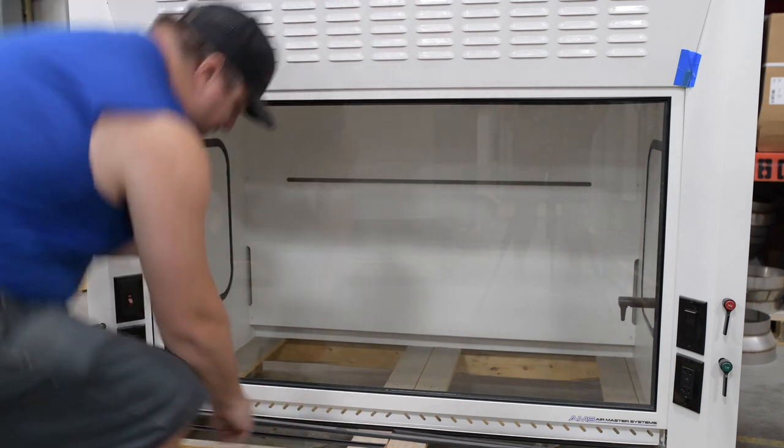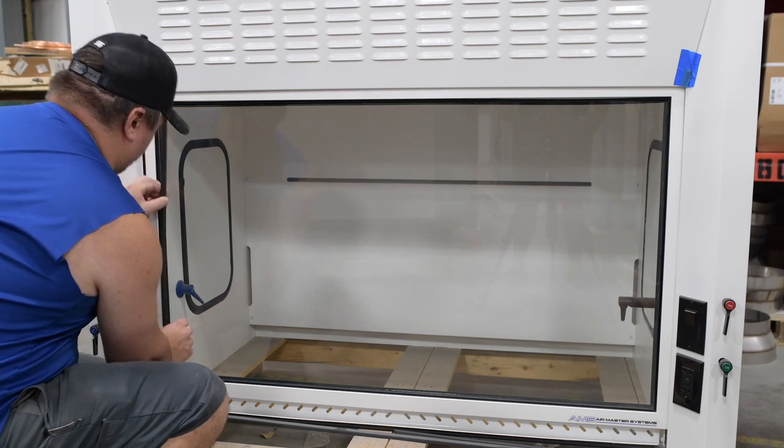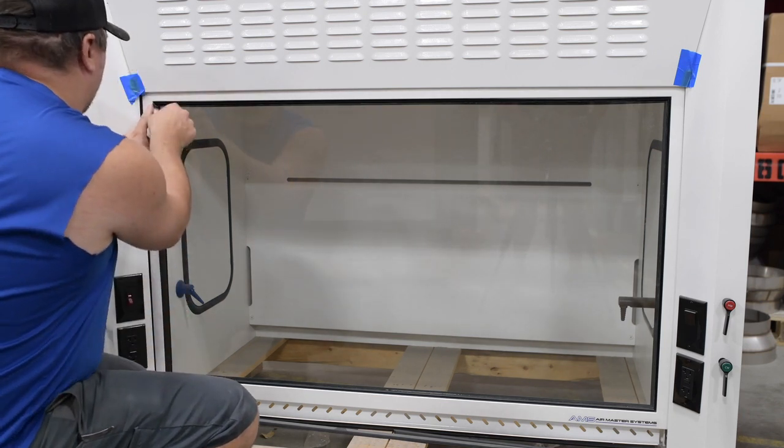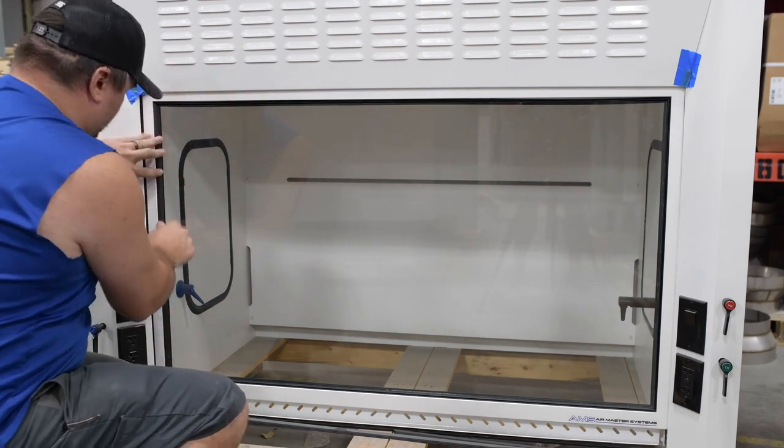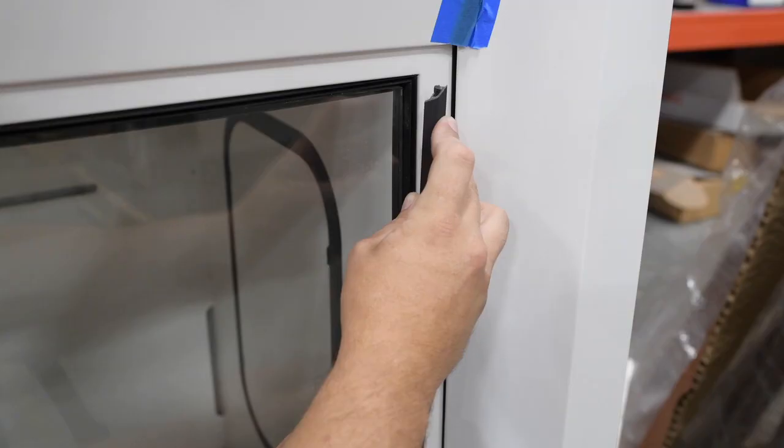You can reuse your previous sash trim to put the new glass into position. Start by sliding the sash trim into the correct spots and put pressure on them. You will notice that the ribs will click into place between the sash and the metal housing.